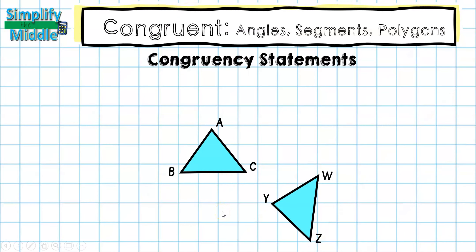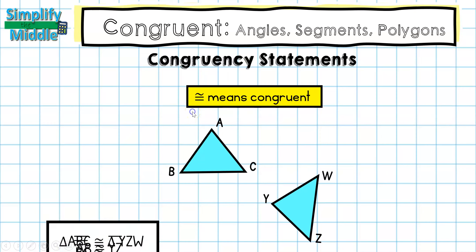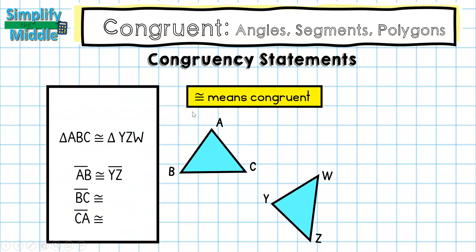Now that we've identified how to write line segments and angle measures, we're going to look at some congruency statements. This is the symbol that means congruent to. Here we have two different triangles: triangle ABC and triangle YZW.